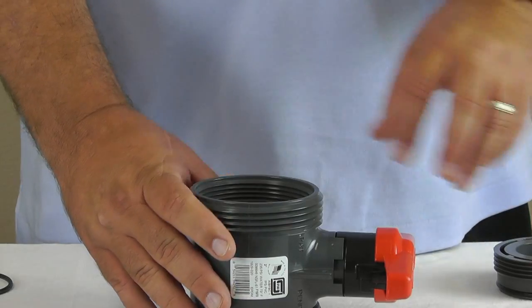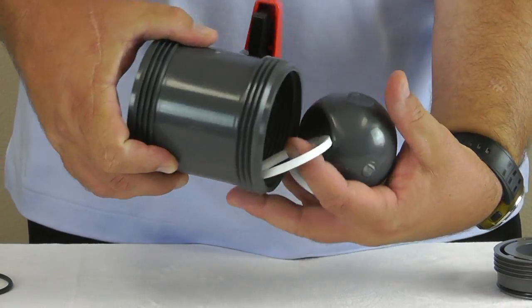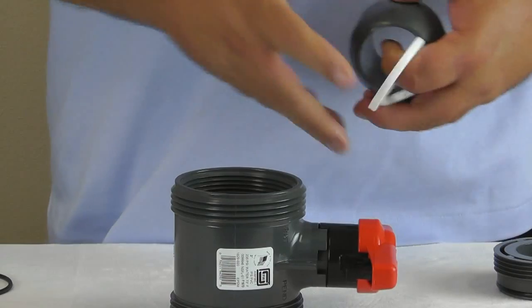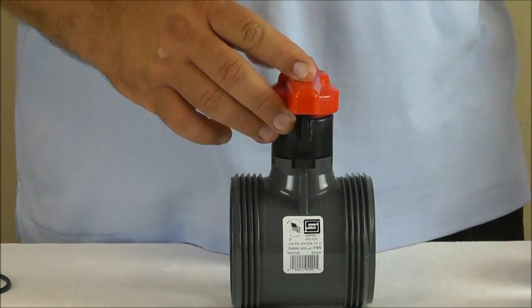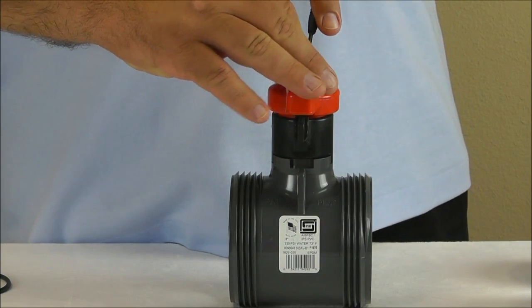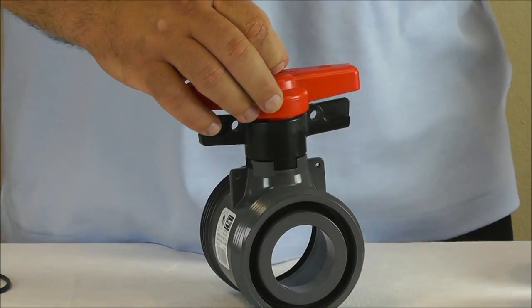Now remove the PTFE seat and ball. Examine the ball for damage and clean as necessary. Remove the valve handle and handle lock by removing the blue cap and retaining screw in the center of the handle.